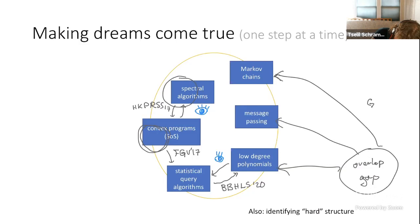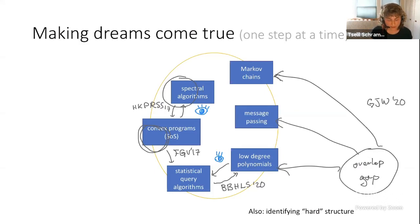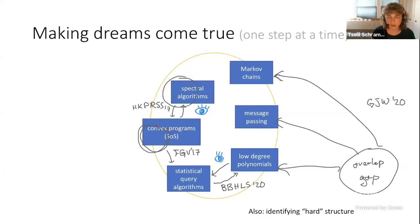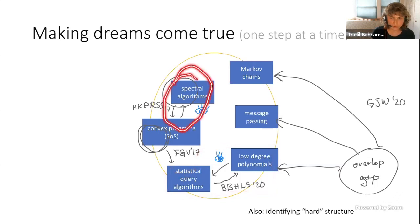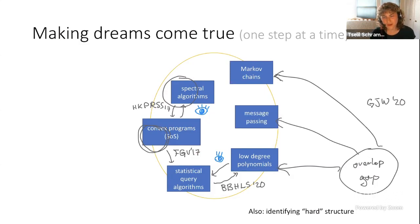There's also a somewhat different approach, which I consider part of this general umbrella of getting reductions between algorithms: understanding what kinds of hard structures cause these algorithms to fail. We saw a couple of talks this morning about the overlap gap property — saying that if there is an overlap gap property, then low-degree polynomials fail, or message passing fails, or Markov chains fail. I think this is also part of the same general idea of having reductions between algorithms, or at least understanding what structures make all these algorithms commonly fail. The plan for the rest of the talk is to see the result reducing SOS to spectral algorithms and vice versa, and then the statistical query versus low-degree polynomial reduction.